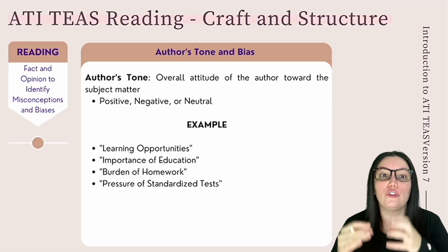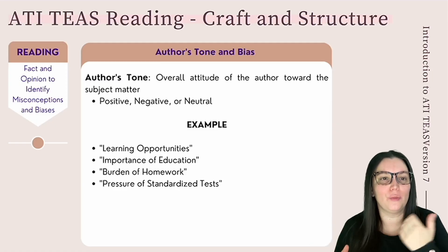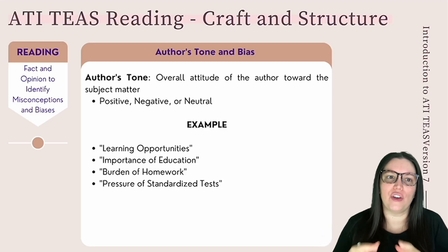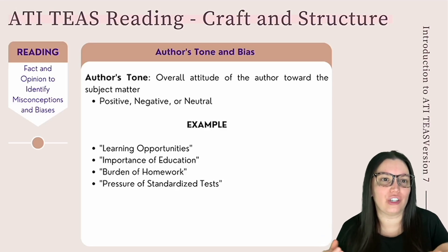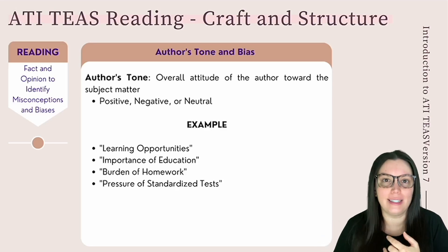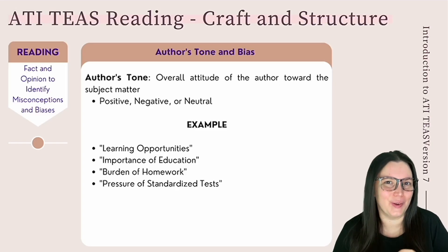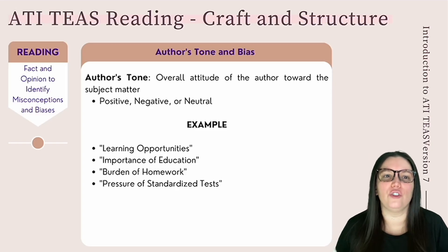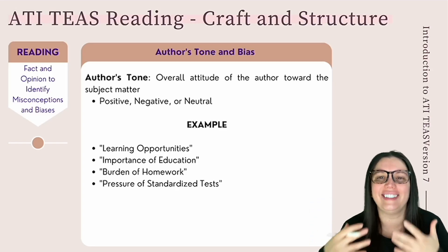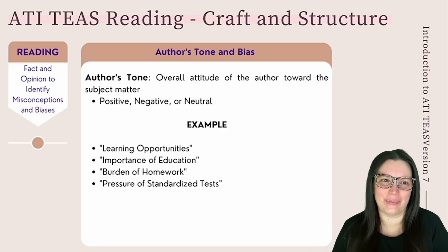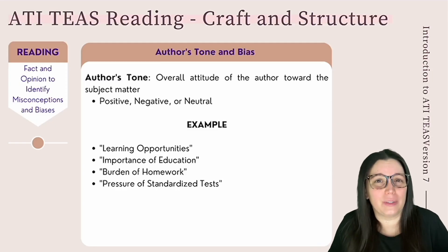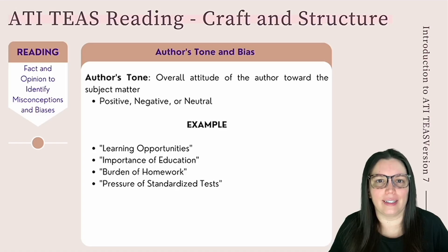Moving on to author's tone and biases. The tone of a text is the overall attitude the author has towards a particular subject matter — this can be positive, negative, or neutral. The ATI TEAS test may also use words such as joyful, detached, and ominous. To determine the tone, it may be best to consider the event, context, or circumstances behind that particular text.